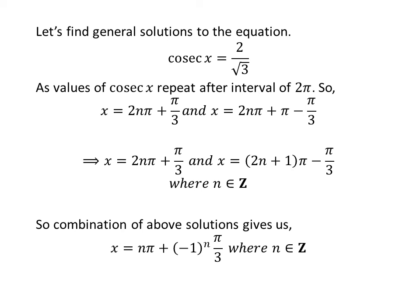So the general solution to the equation is nπ plus (-1) to the power n times π upon 3, where n is an integer.